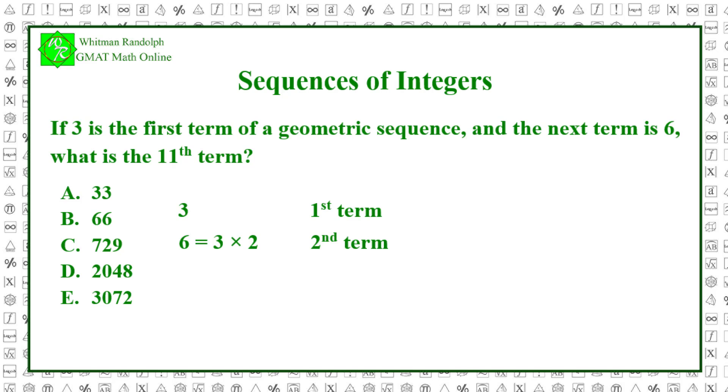So the third term is 3 times 2 times 2, which equals 3 times 2 squared, and that equals 12. And the next two terms are 3 times 2 cubed, which equals 24, that's the fourth term, and 3 times 2 to the fourth, which equals 48, and that's the fifth term.